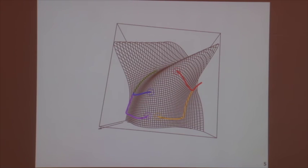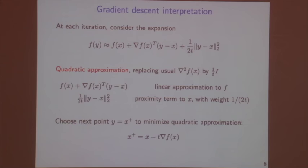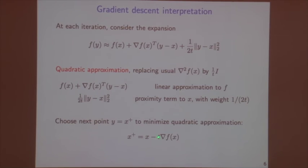For non-convex functions, gradient descent can be problematic. But in this class we're mainly dealing with convex optimization, so our functions are usually convex and we're fine.